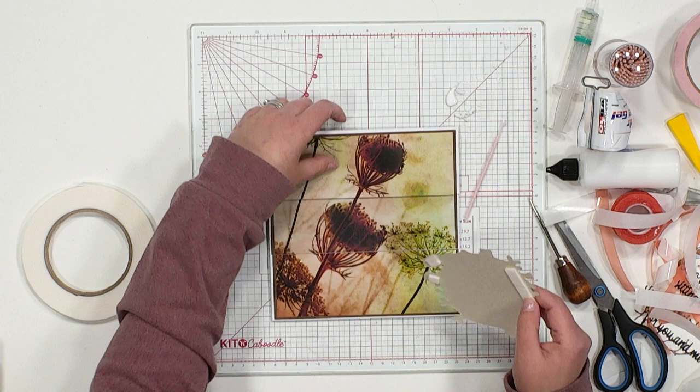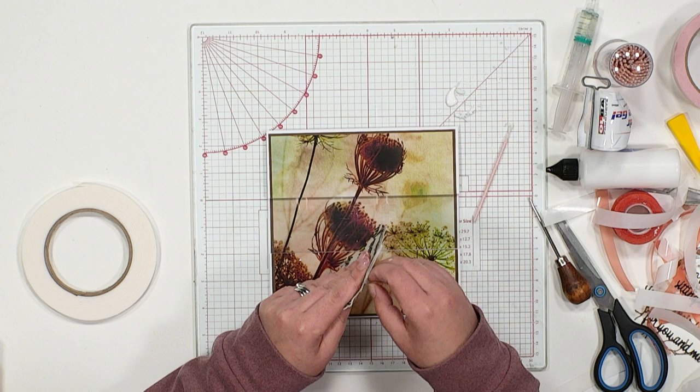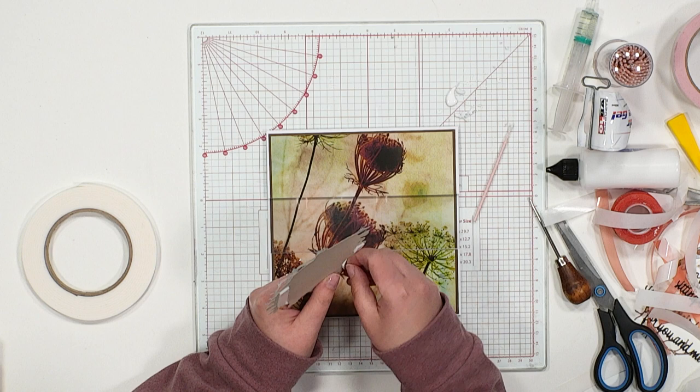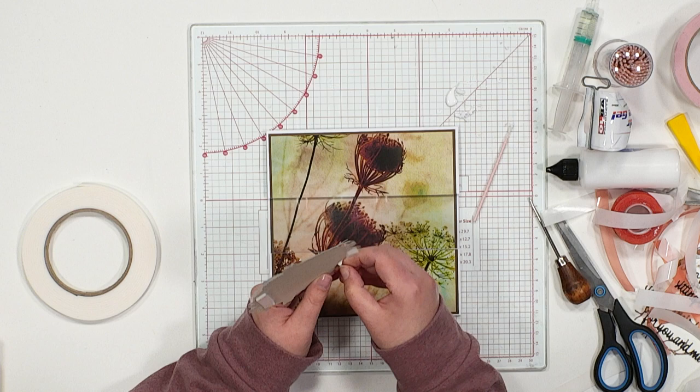And once you're happy, you can come in, remove the carrier sheet from the foam tape from the bottom and also the top. Notice I haven't put any tape to the middle, that's because we don't want any showing on the aperture there.